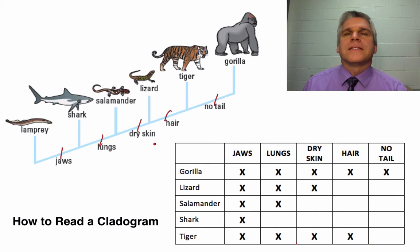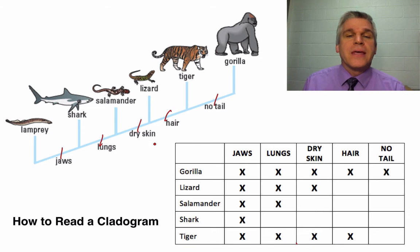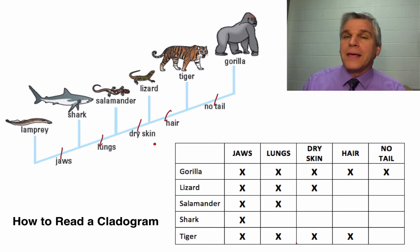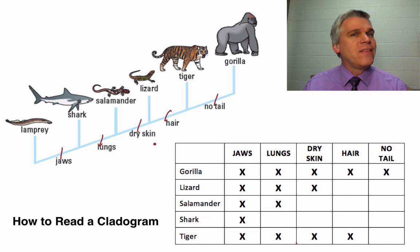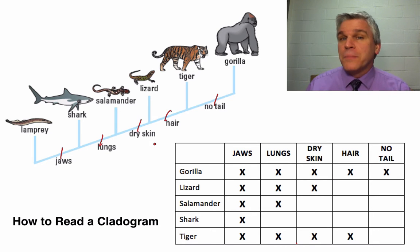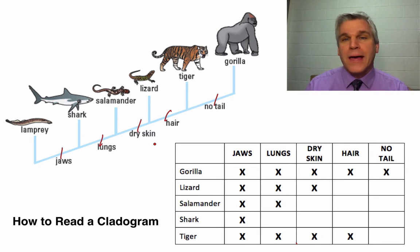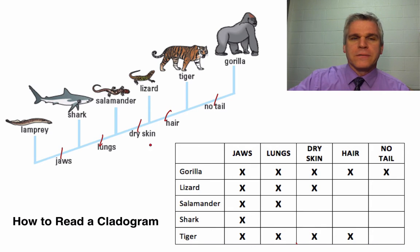So what we're going to be practicing over the next couple of activities is how to take a table and make a cladogram. But we're also going to look at a cladogram and make a table. And then you're going to look at some pictures and make a table and a cladogram from that. So let's practice one of these.